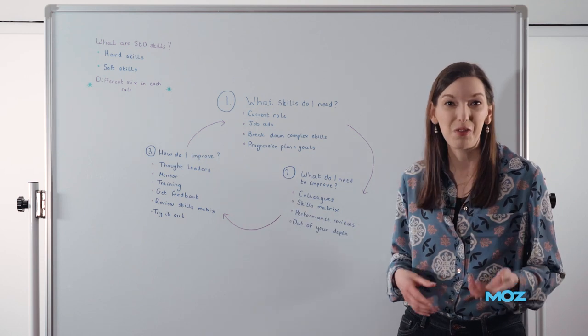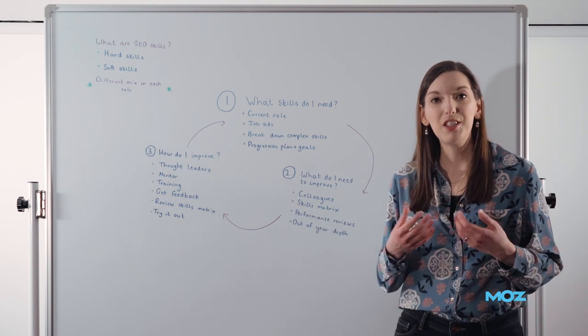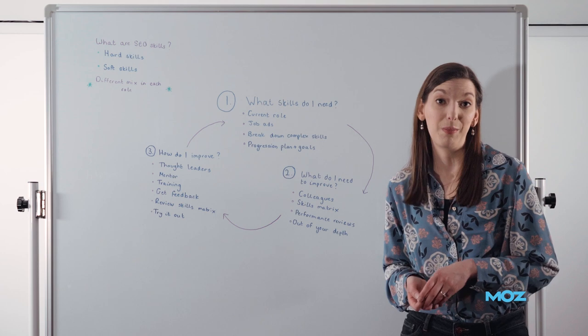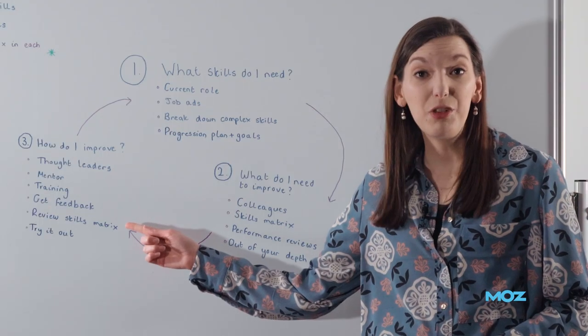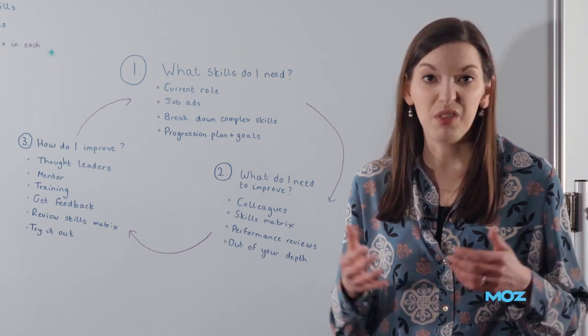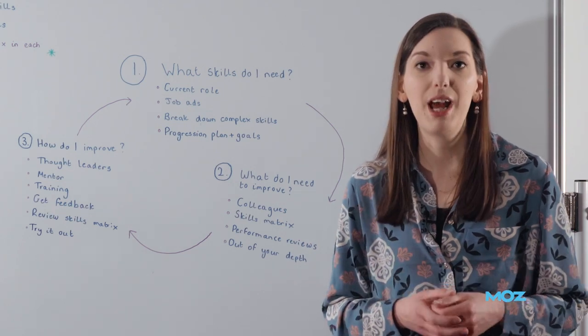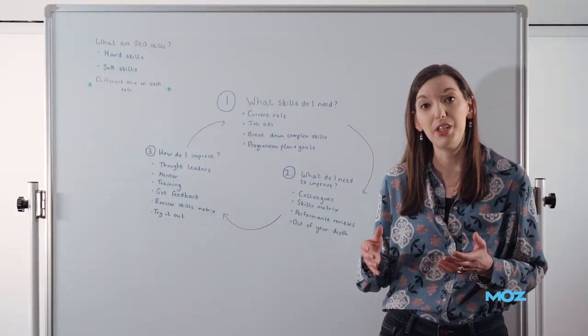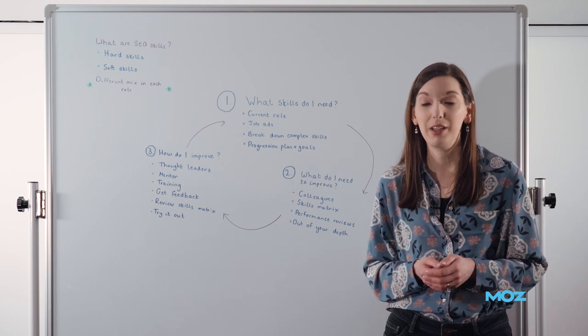And get feedback from your mentor, from your colleagues, from your boss. Ask people to let you know whether they think you're developing those skills or not. Have a look at your skills matrix. Make sure you're just not leaving it on your desktop to gather metaphorical dust, but actually brush it off and have a review. How have you developed over time against those skills that you listed out a while ago?